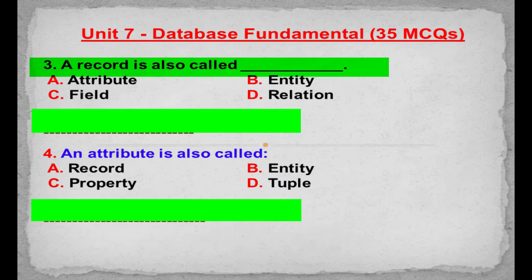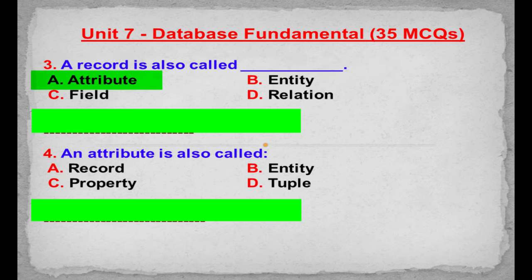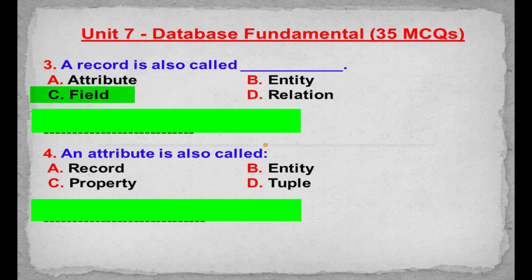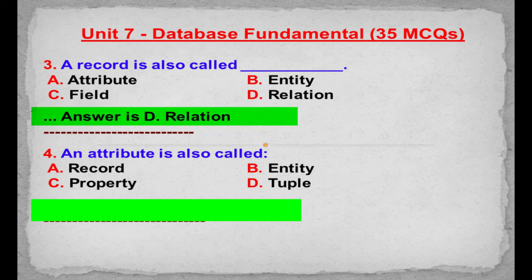MCQ number 3: A record is also called. Option A: Attribute. Option B: Entity. Option C: Field. Option D: Relation.